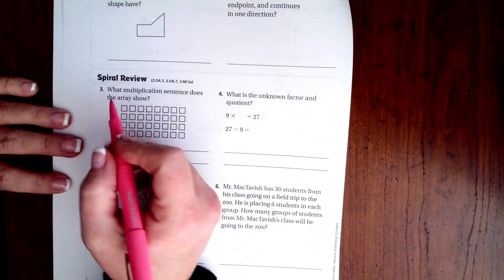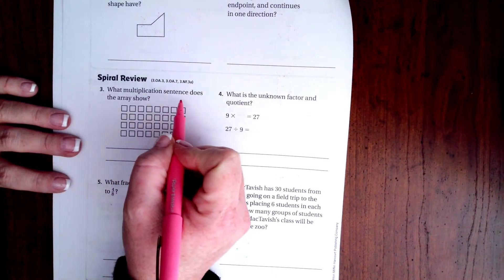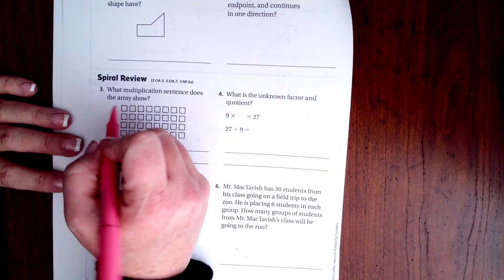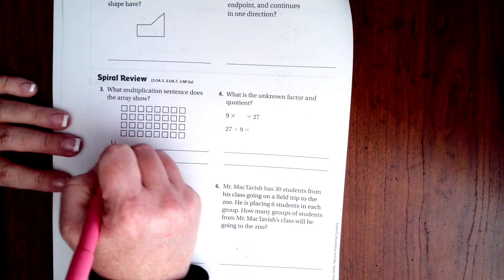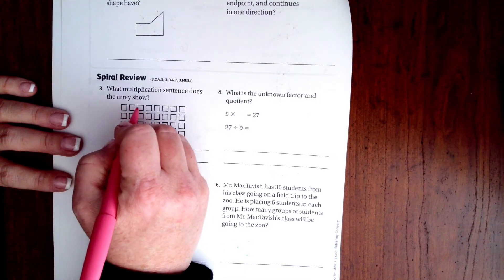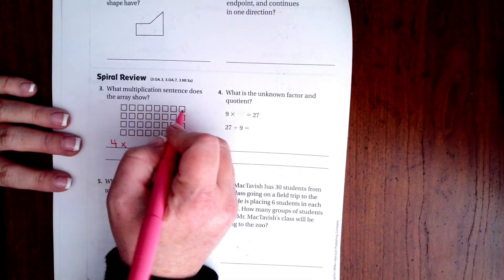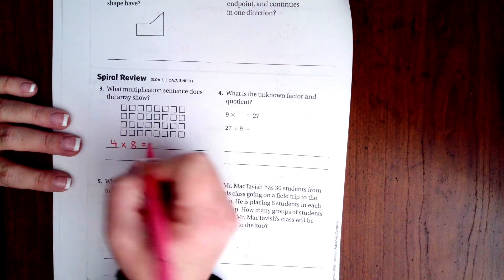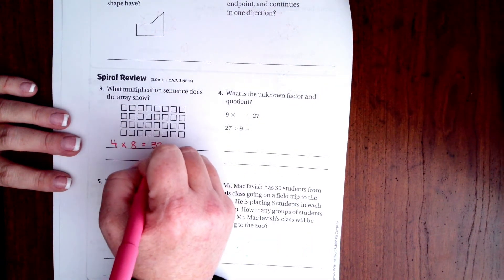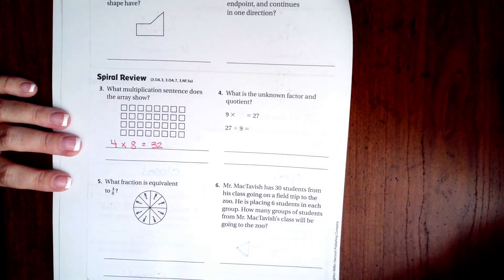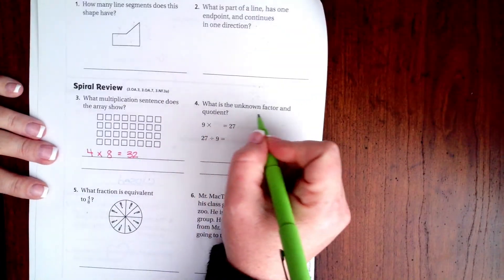This says what multiplication sentence does the array show. So we have one, two, three, four times one, two, three, four, five, six, seven, eight. And then four times eight is thirty-two.